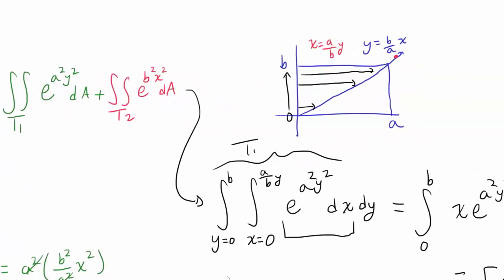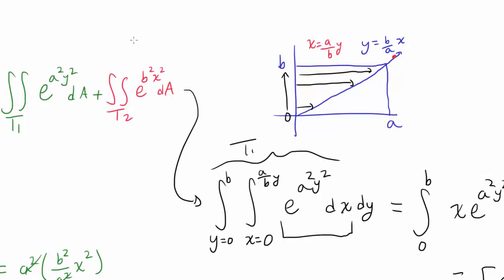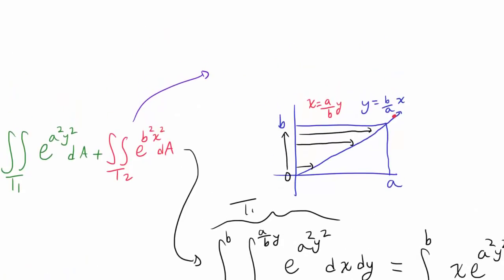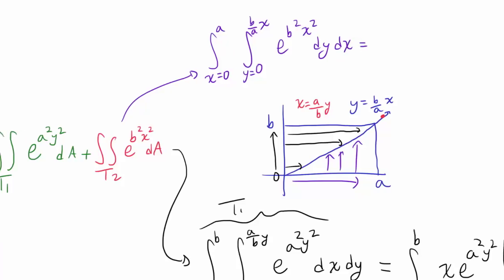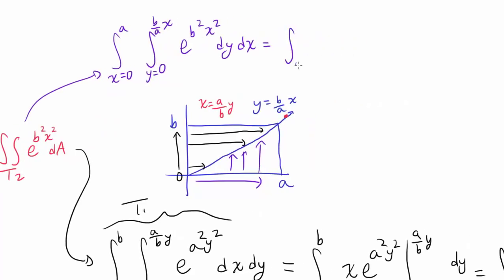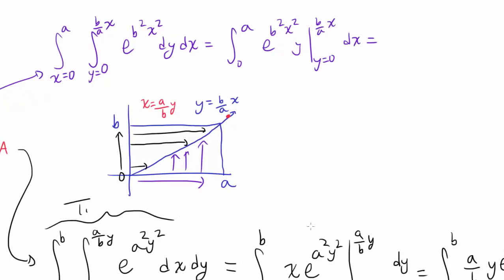Now for T2: x goes from 0 to a, and y goes from 0 to (b/a)x. So the T2 integral is the integral from 0 to a, from 0 to (b/a)x, of e to the b squared x squared dy dx. Integrating with respect to y gives e to the b squared x squared times y, evaluated from 0 to (b/a)x — giving the integral from 0 to a of (b/a)x times e to the b squared x squared dx.